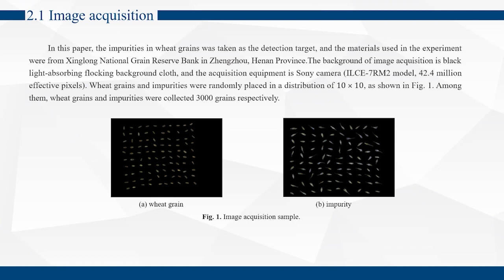the materials used in the experiment were from Xinxiang National Grain Reserve Bank in Zhengzhou, Henan Province. The background of image acquisition is black light absorbing, blocking background clues. The acquisition equipment is a Sony camera. Wheat grains and impurities were randomly placed in a distribution of 10 by 10.